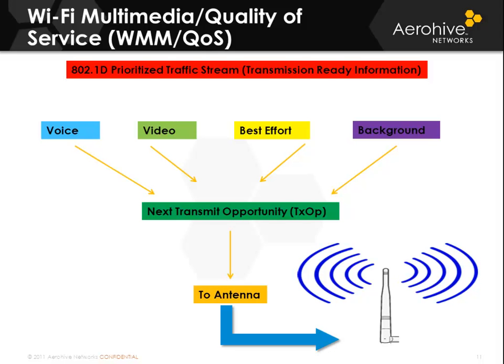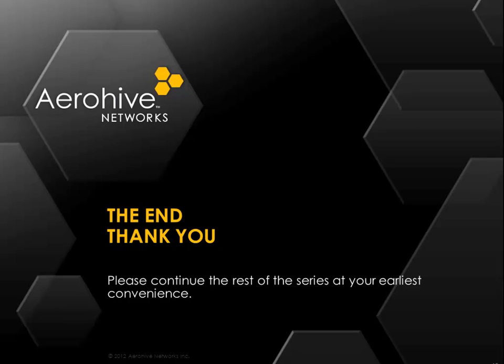802.1D prioritizes traffic streams. When you look at voice, video, best effort, and background, you will get the transmit opportunities to have a chance to go to the antenna to be radiated in the air. This internal contention happens prior to the traffic being placed in the air on all QoS-enabled devices. Thank you for watching this session from ArrowHive. Please continue the rest of the series at your earliest convenience.